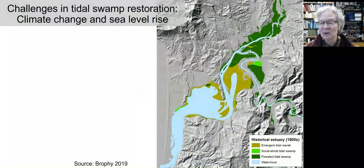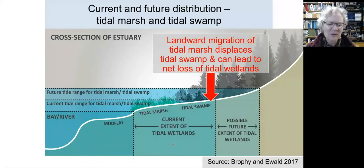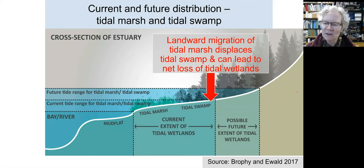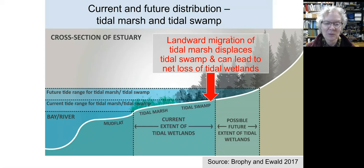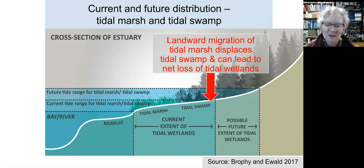Of course, we also have to be thinking about sea level rise and climate change. The future distribution of these marshes and swamps won't be the same as the historical or current distribution. Tidal swamps and marshes exist within a limited elevation range above mudflats and tidal rivers. With sea level rise, they will probably need to migrate landward. A very important point is that landward migration of tidal marsh often displaces the upslope tidal swamps, and can lead to net loss of tidal wetlands if those tidal swamps are unable to migrate — which is more often the case due to land use barriers, physical topographic barriers, and the time it takes to develop tidal swamps.